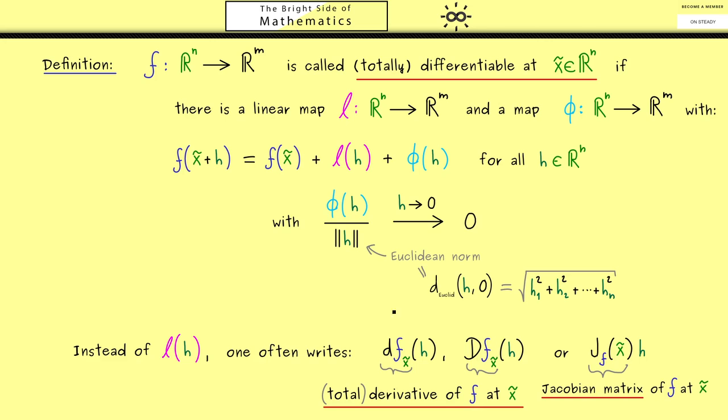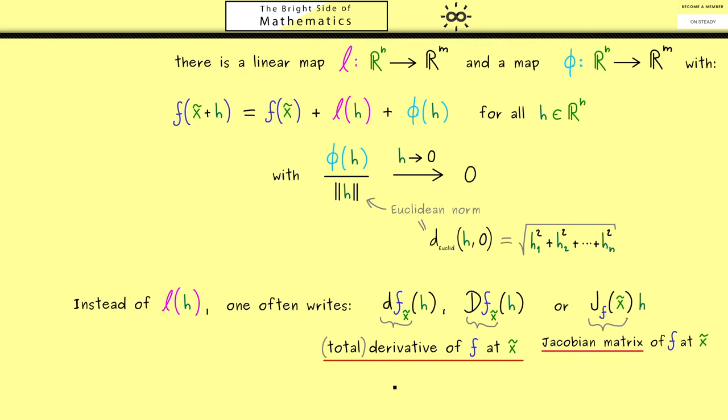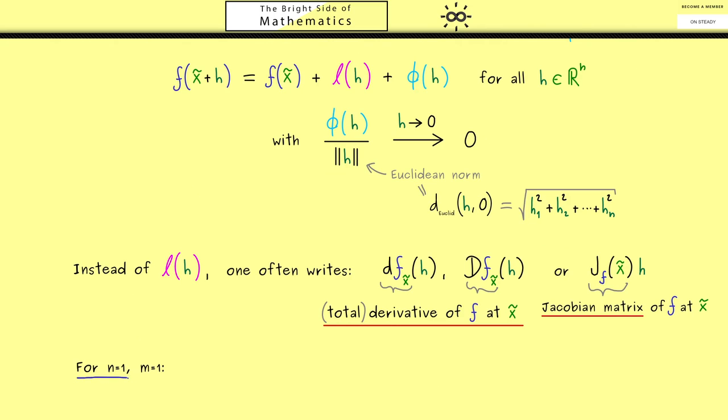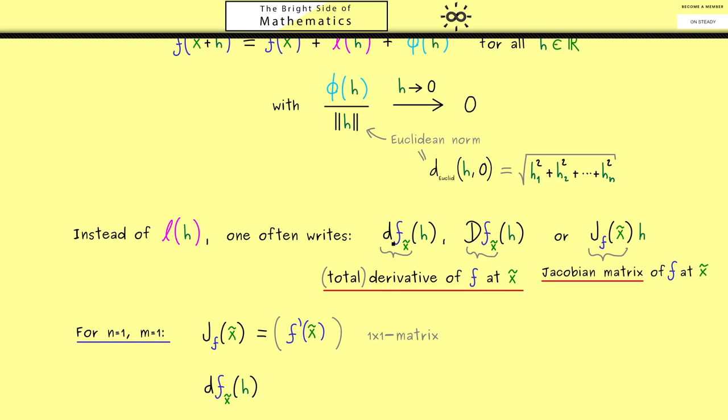Ok, maybe for a better visualization let's look what all these objects are in the one dimensional case. In other words if n and m are both equal to 1. Then in this case if the function f is totally differentiable at x tilde, jf at x tilde is given by the derivative of f. More precisely we would say it's a 1x1 matrix with the number f' at x tilde. So obviously not so complicated at all. Moreover if we would write it as an abstract linear map df of h, we simply would have f' of x tilde times h. Hence you see obviously the one dimensional case is included in the definition above.